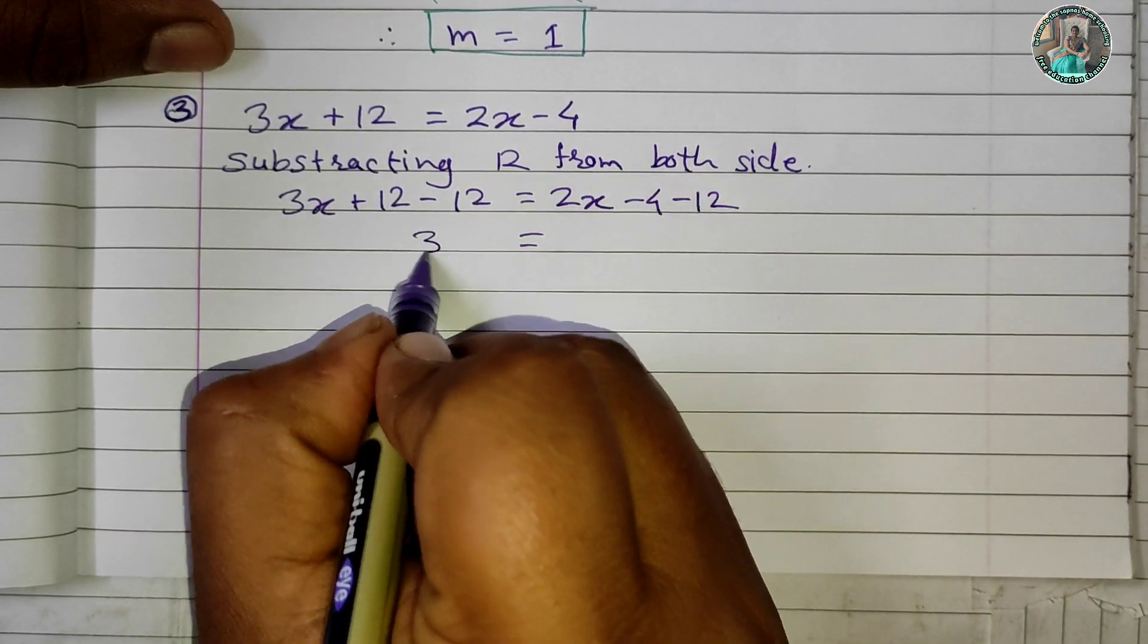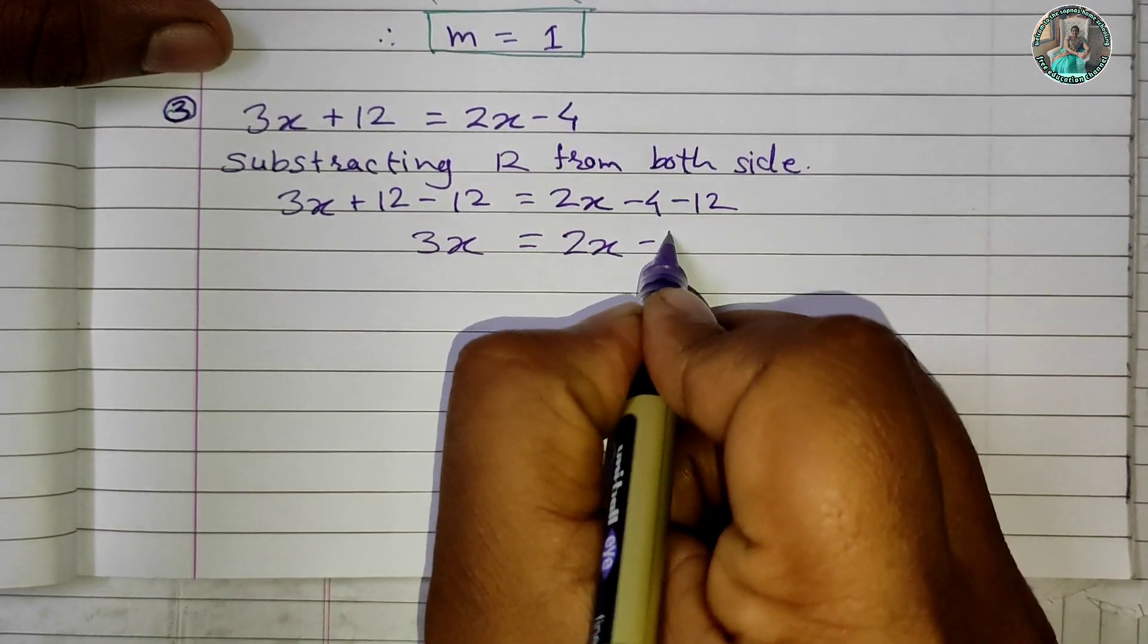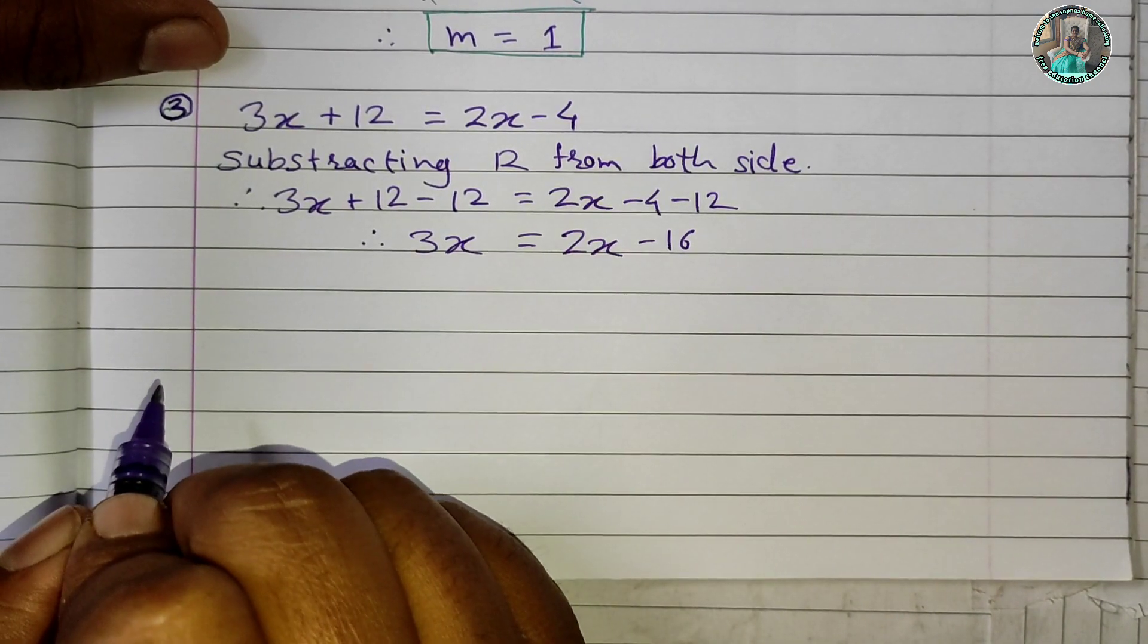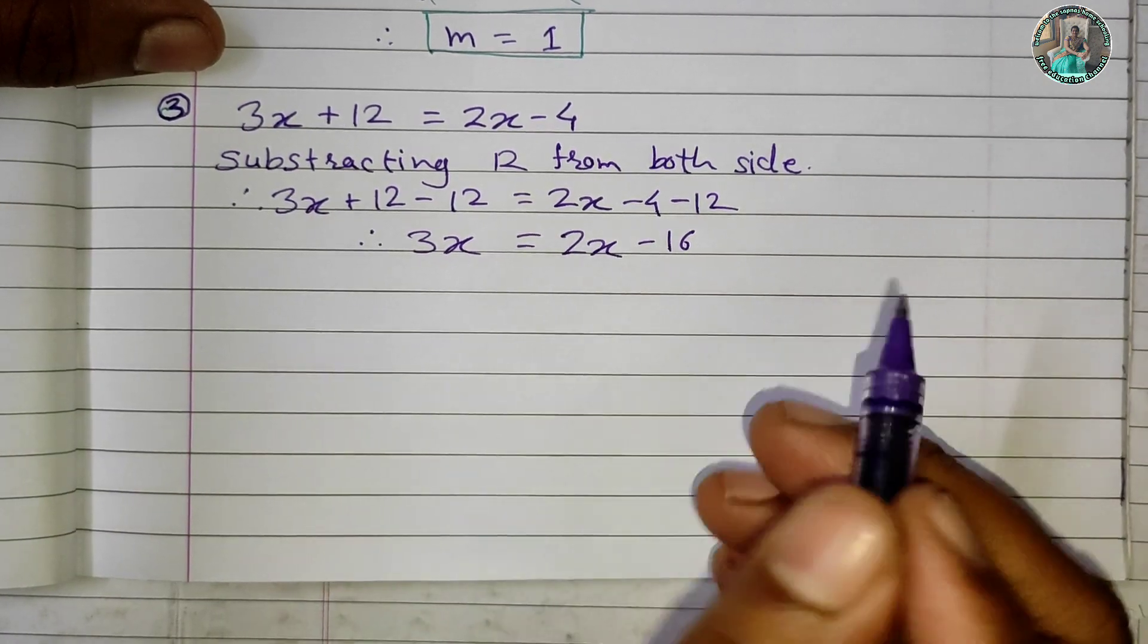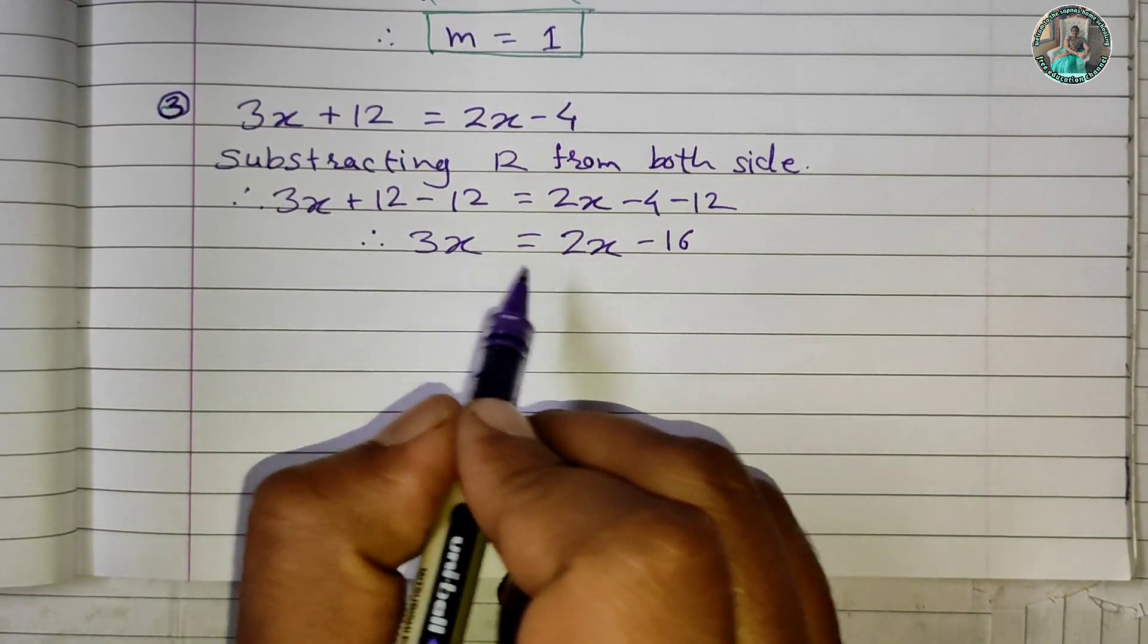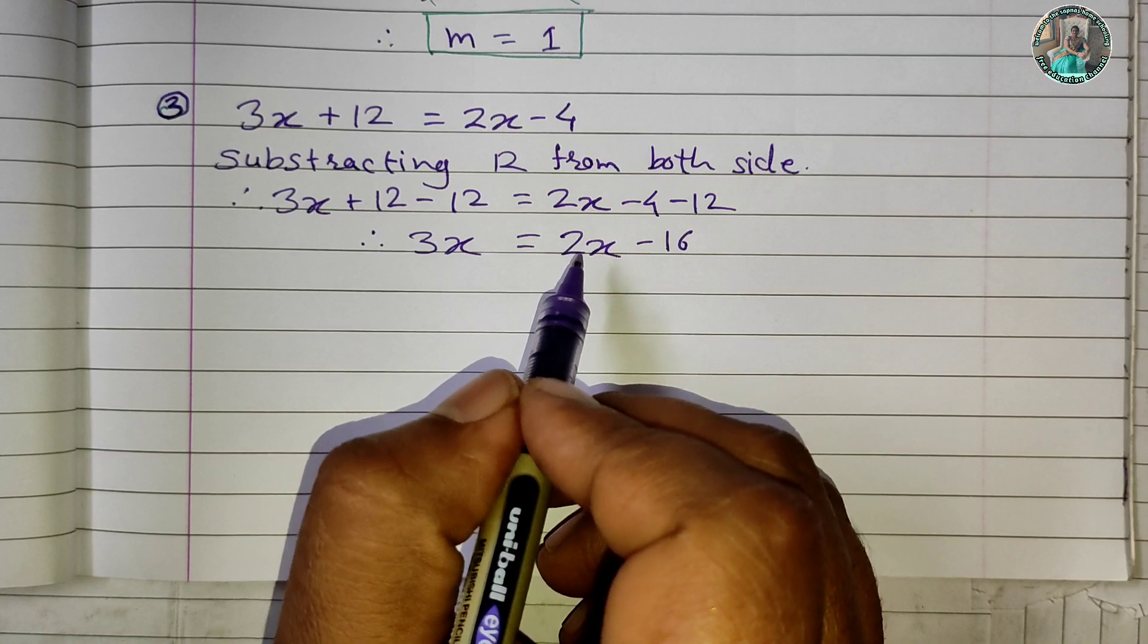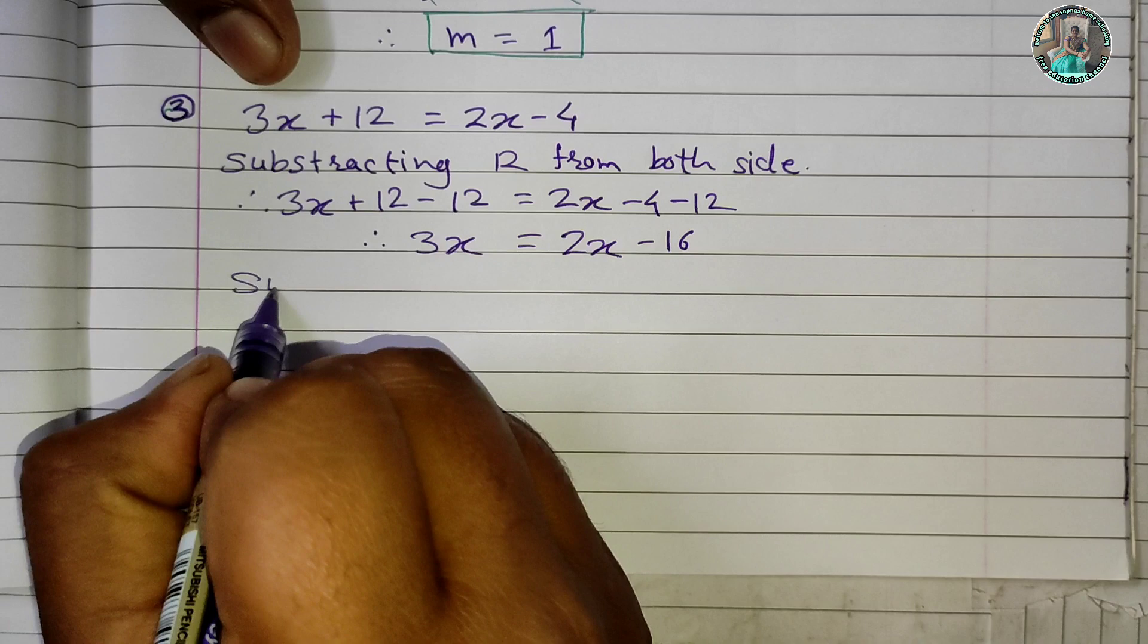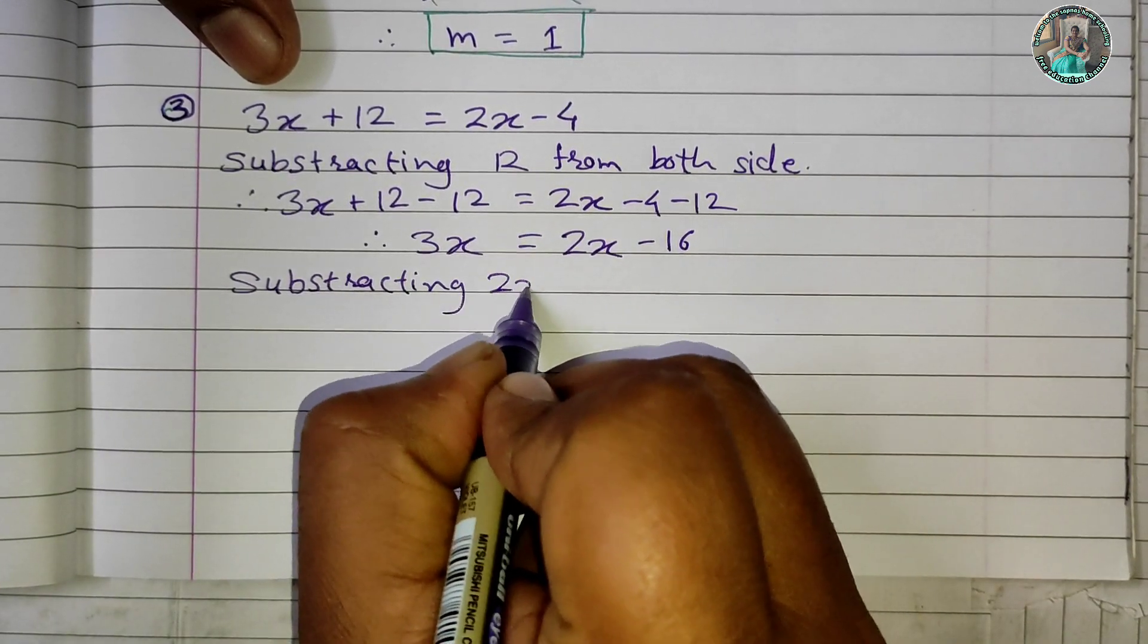This gives us 3x = 2x - 16. Now we need to isolate x, so we subtract 2x from both sides.